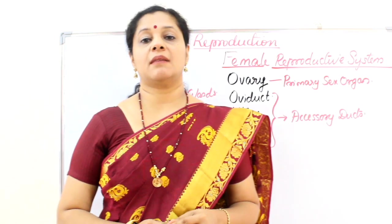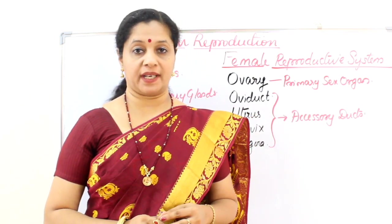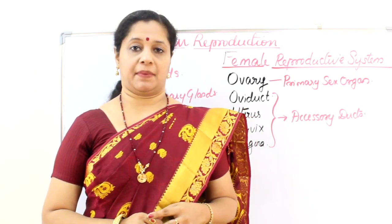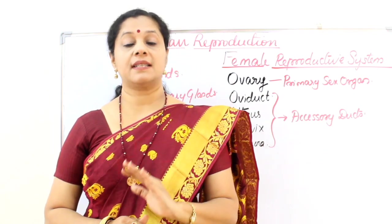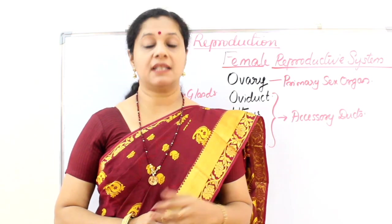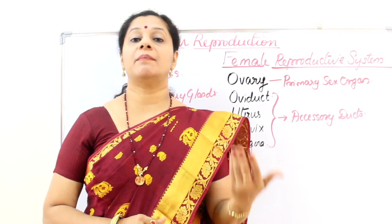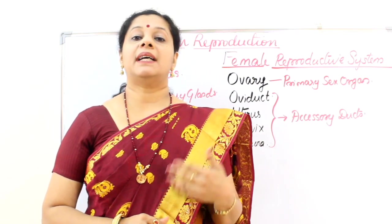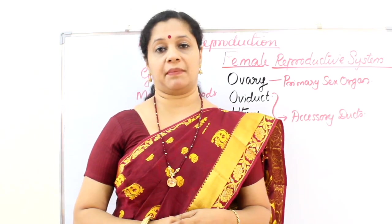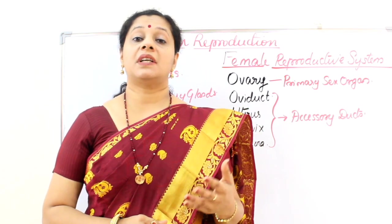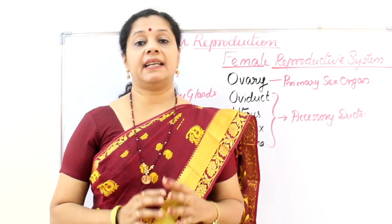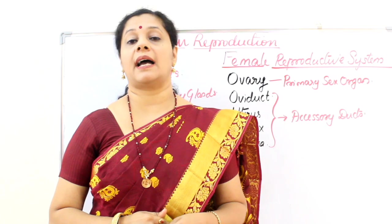The female reproductive system includes the primary organ called the ovaries and the secondary organs. In the female body, more events are happening. Males had only spermatogenesis and insemination, that is sperm transfer or gamete transfer. Whereas in females, ovulation is the first process where the ovum is released from the ovary, followed by fertilization, implantation, childbirth, and child care.